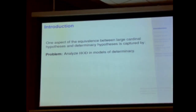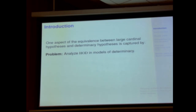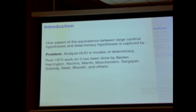One aspect of this connection or equivalence between large cardinal principles and determinacy ones is this old problem: analyze the hereditarily ordinal definable sets — HOD — in models of determinacy. Determinacy models do not satisfy the axiom of choice and don't have conventional large cardinals. They satisfy the determinacy side of our picture. Their HODs are models of choice, and it turns out those HODs have large cardinals in them. There's an equivalence between the large cardinals in HOD and the determinacy principles, so you can go back and forth between HOD and the determinacy model.